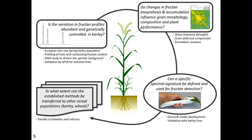With these questions in mind, we aim to answer a few of them. First, is the variation in fructan profiles abundant and genetically controlled in barley? Then, if we have differences in the profiles, do they relate to final grain composition, grain morphology, and also to plant performance under certain stresses — in my case, drought. We would also like to develop a specific sensor enabling fast and cheap detection of fructans, probably in the leaf and in the grain. And finally, we would like to translate this knowledge and technologies to breeders and industry.